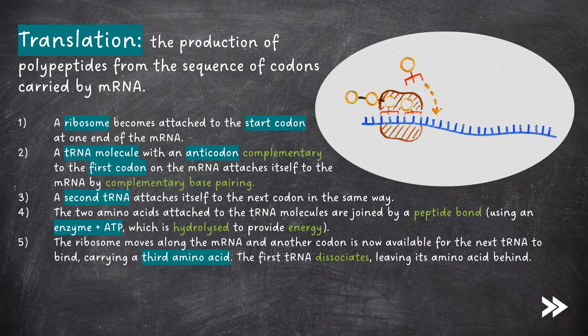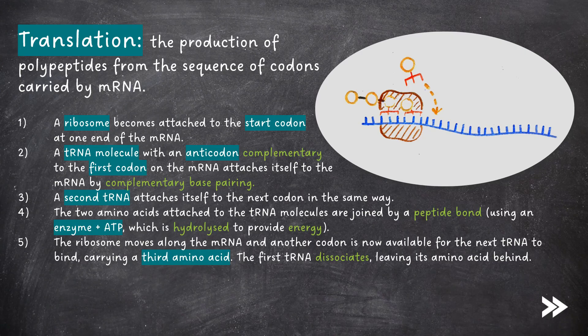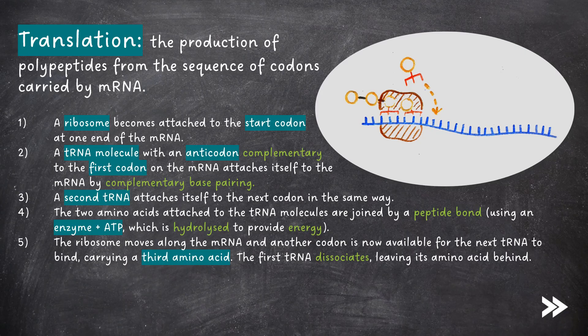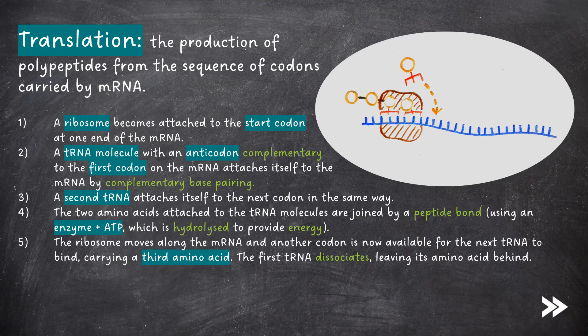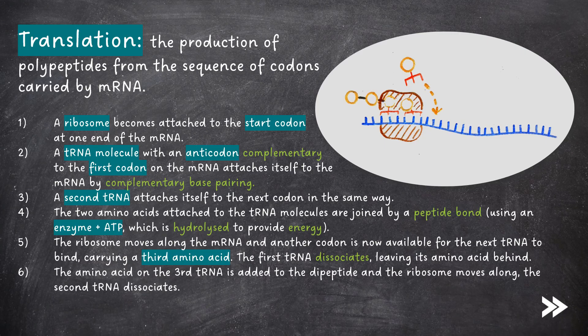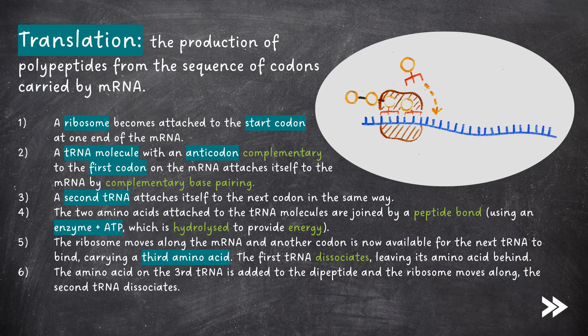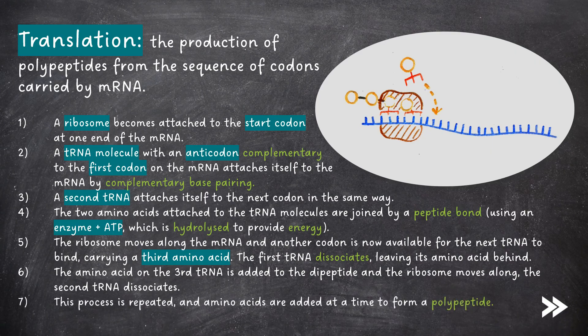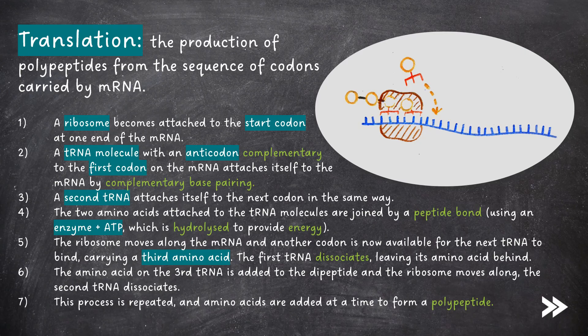Next, the ribosome moves along the mRNA and another codon is now available for the next tRNA to bind, carrying a third amino acid. The first tRNA dissociates, leaving its amino acid behind. The amino acid on the third tRNA is added to the dipeptide and the ribosome moves along. The second tRNA then dissociates. This process is repeated and amino acids are added at a time to form a polypeptide.